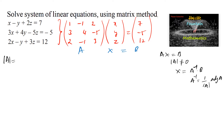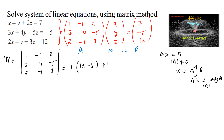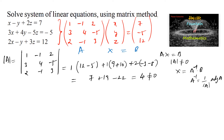The determinant of matrix A — that is, the determinant of [1, negative 1, 2; 3, 4, negative 5; 2, negative 1, 3] — equals 1 times (12 minus 5), plus 1 times (9 plus 10), plus 2 times (negative 3 minus 8). That gives 7 plus 19 minus 22, which equals 4. Since this is not equal to zero, a unique solution exists.